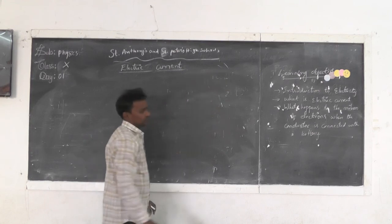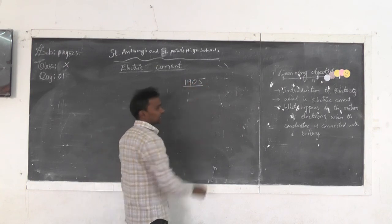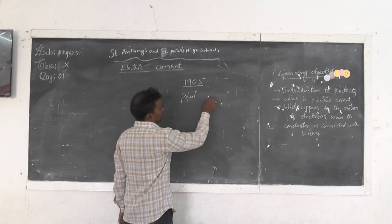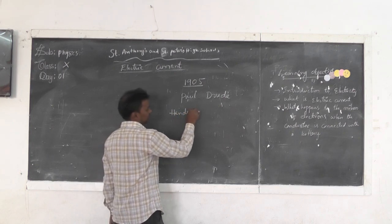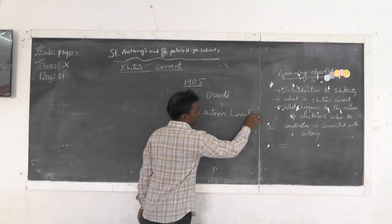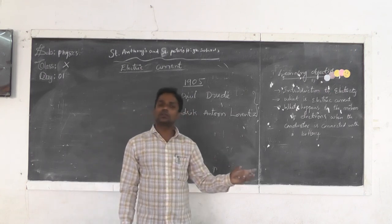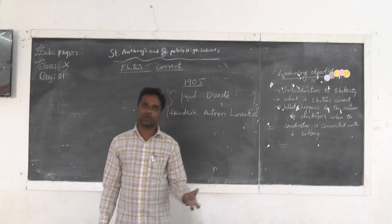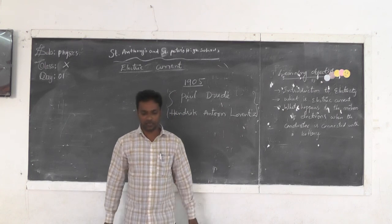In 1905, two scientists — Paul Drude and Lawrence — gave the concepts of this particular behavior of conductors: how the current will be flowing and how it is obstructed, which will be discussed with the help of a diagram in the next class. So with this, we will continue. Thank you.